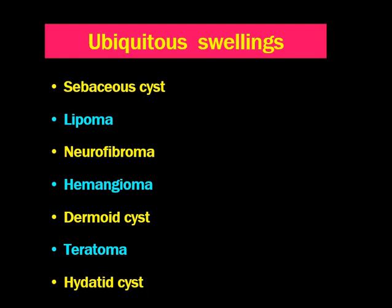The ubiquitous swellings are: sebaceous cyst, which can be found everywhere starting from the lower lip to the suprasternal notch. Likewise, lipoma, neurofibroma, hemangioma, dermoid cyst, teratoma, and thyroglossal cyst can be found anywhere in the midline neck starting from the lower lip to the suprasternal notch. They have certain characteristic features which can differentiate them from other tumours.